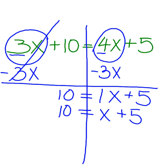I want to undo addition by subtracting. I was adding 5 here, so I will subtract 5 from each side.